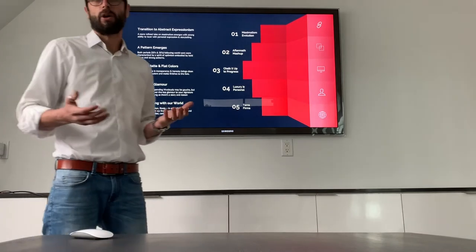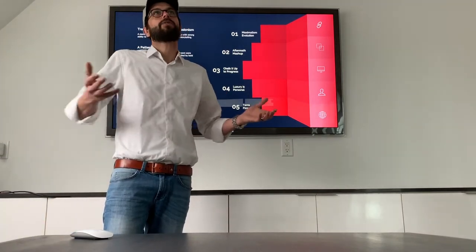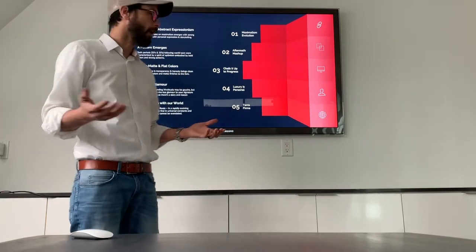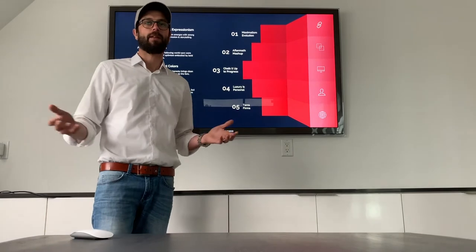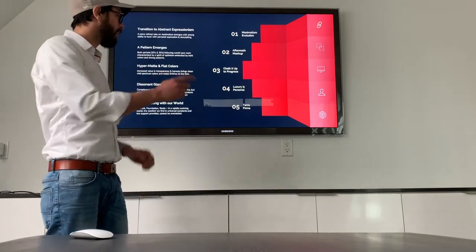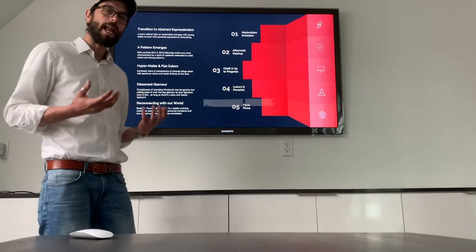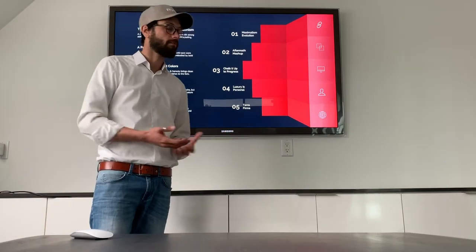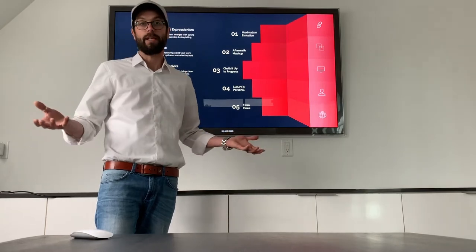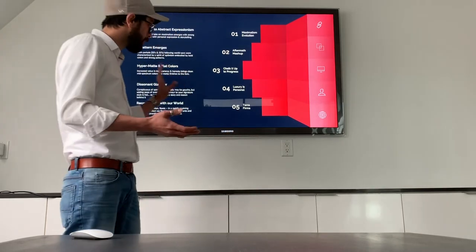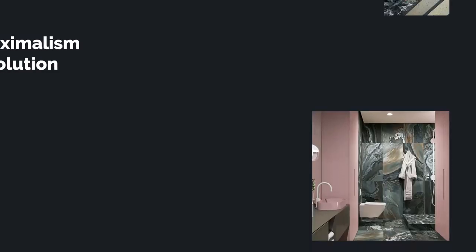We're going to touch on what constitutes luxury today — what interests us in terms of a luxury product and how luxury is much more personal and actually has to tell a story. And then finally, very poignant for ceramic tile, our connection with the earth. Given that tile is a completely natural material — really just baked dirt — this terra firma trend becomes very important for us in tile.